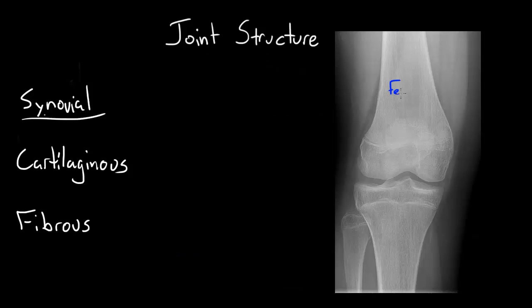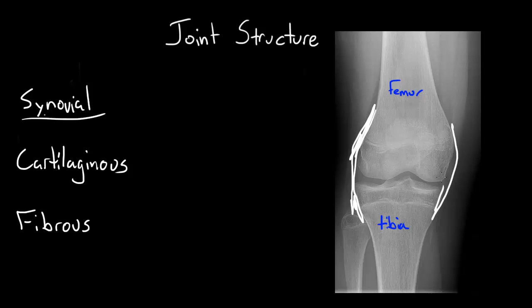Hinge joints allow a single plane of motion. A main example is the knee or the elbow. Here is an x-ray of a knee showing the articulation between the femur and the tibia. A knee's motion is actually more limited by various soft tissue components that hold it together rather than the shape of the bones themselves.